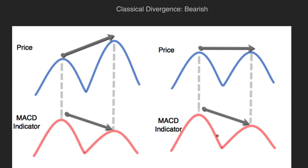In a classical bearish divergence case, price makes a higher high — I've marked two at the higher high versus one. Price makes a higher high, but MACD doesn't show that strength when two is at a high. So instead of making a higher high, the indicator diverges by showing weakness, making a lower high at number two. The right-hand side shows the same situation: price makes a higher high, but your MACD indicator shows weakness by making a lower high. So this is a form of bearish divergence — your indicator tells you that when price makes an attempt to make a new high, it is showing weakness by making a lower high.